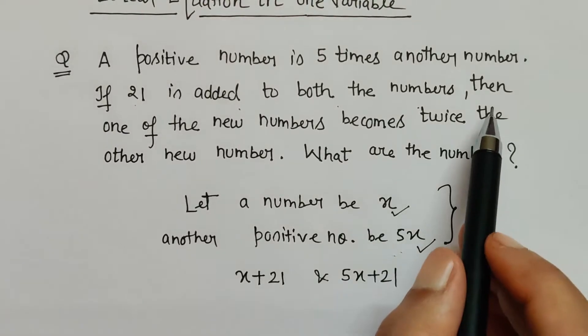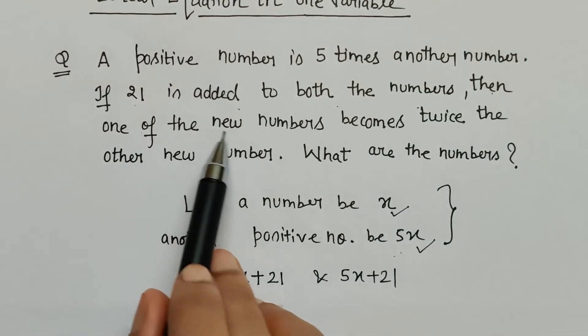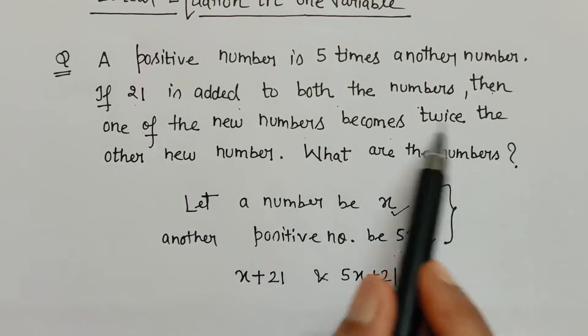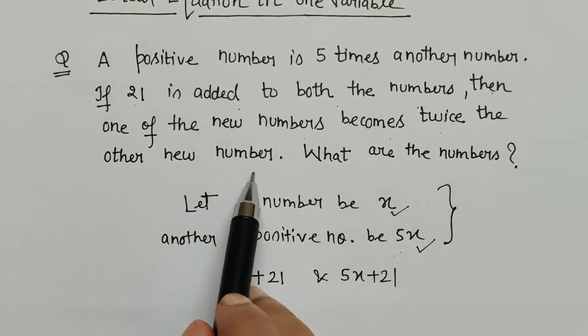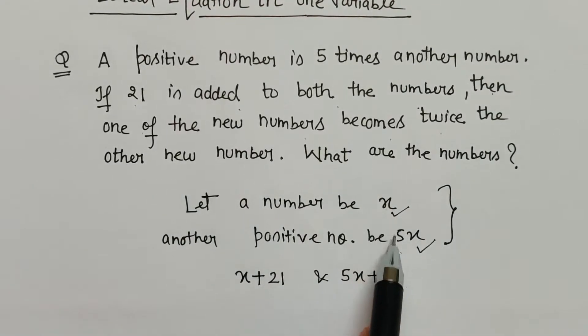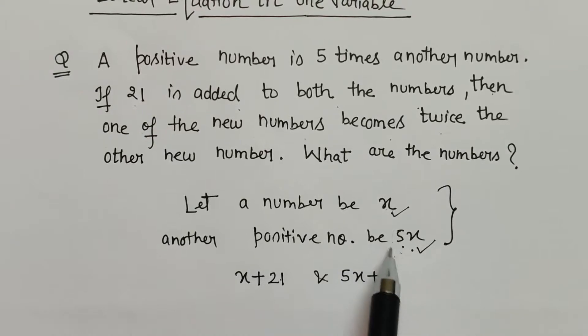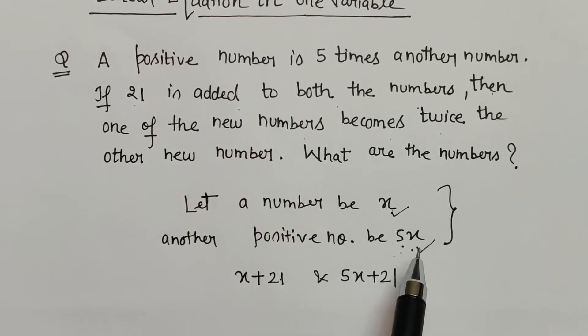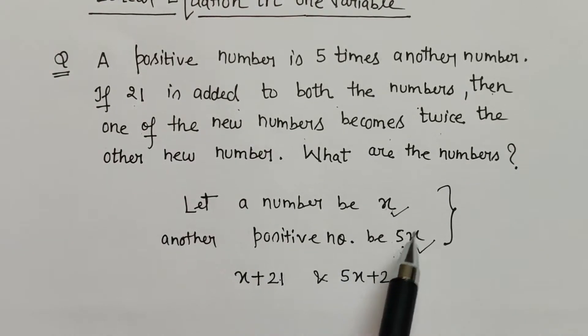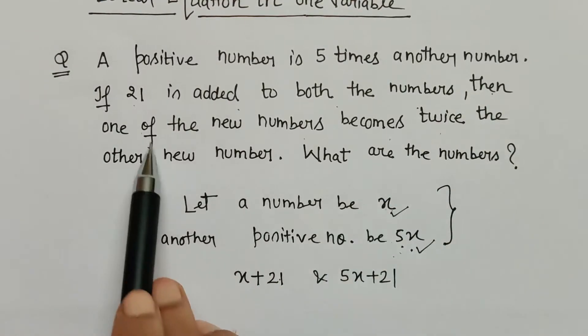Then what happens? Then one of the new numbers becomes twice the other new number. So already we know this is smaller and this is bigger. So when we are adding the same value to both, obviously the bigger will be the biggest in that scenario also after adding 21.